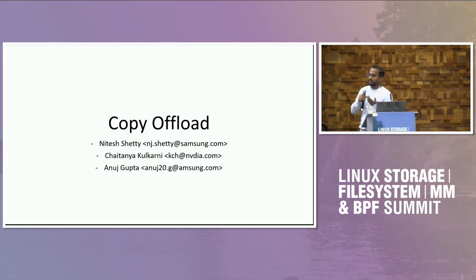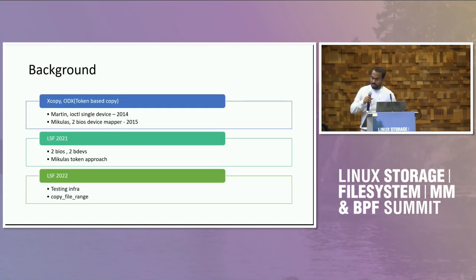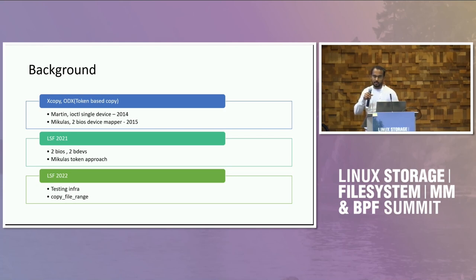The idea here is that you issue a copy offload command to a device and it does the copy inside the device — maybe sometimes across namespaces as well. The main advantage is reduction in CPU and PCI bandwidth, and in the Fabrics case, mainly network bandwidth.